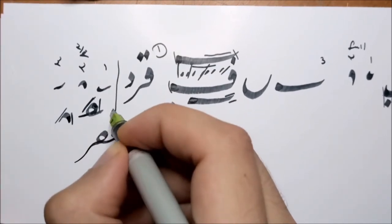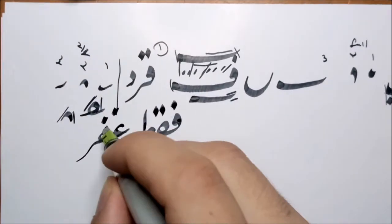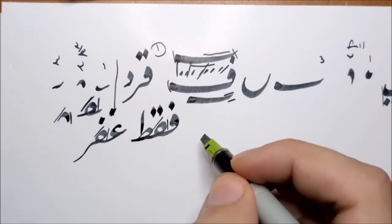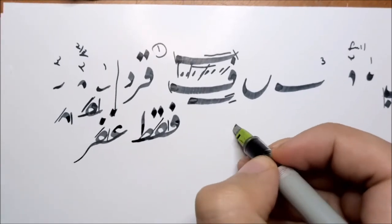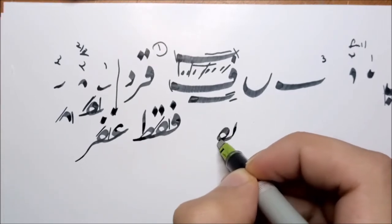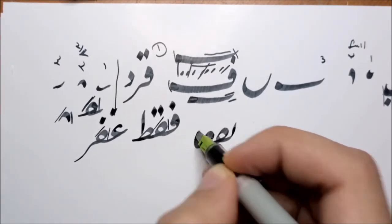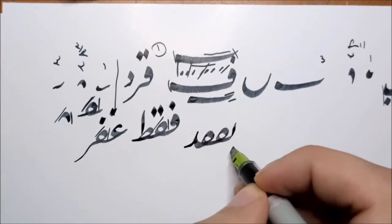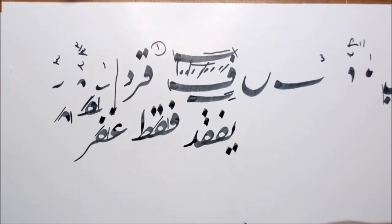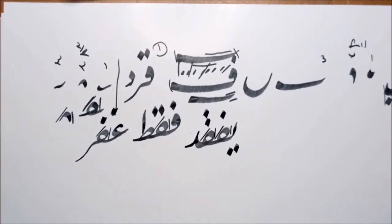We could also note the angle we talked about here. It's always here. We could write Yafqid. So we have a Ya. We use the high-end Ya. Then we add a Fa. Then we add a Qaf. Then we add a Dal. So here we have a variety of examples on the middle Fa or Qaf.